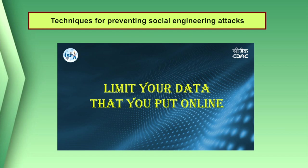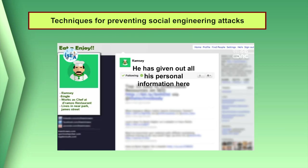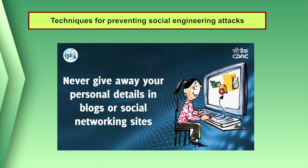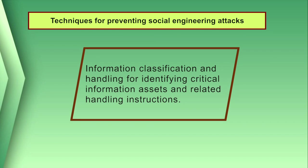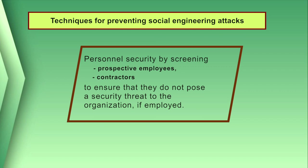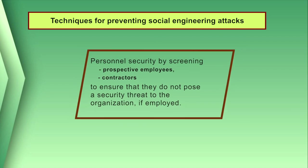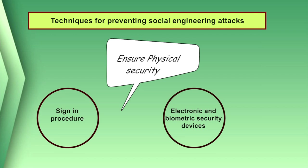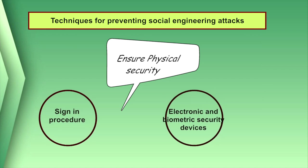Do not provide personal information or information about your organization, including its structure or networks, unless you are certain of a person's authority to have the information. Implement information classification and handling procedures for identifying critical information assets. Ensure personnel security by screening prospective employees and contractors to verify they do not pose a security threat. Also ensure physical security to secure the facility from unauthorized physical access using sign-in procedures and electronic and biometric security devices.